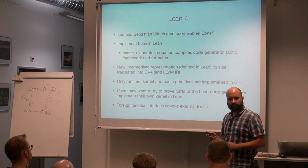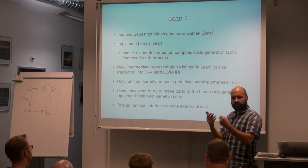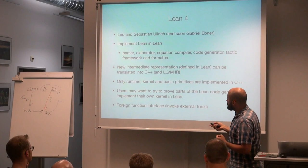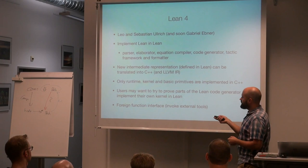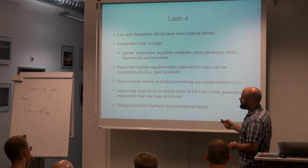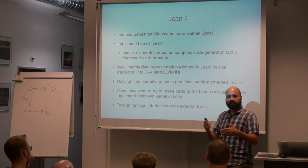The reason to keep the kernel in C++ is that the kernel is the only thing we really want to trust — when the kernel accepts a proof, we trust that proof. Of course the question is whether we trust it if it's written in C++. The idea is that if we provide all this infrastructure, users could implement their own kernel in Lean, compile it down to C++, and have their own type checker and proof checker.